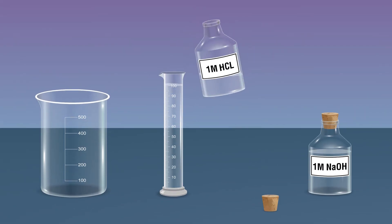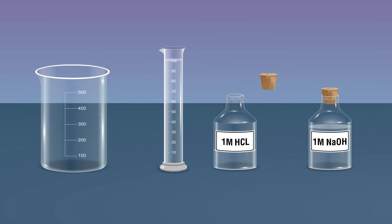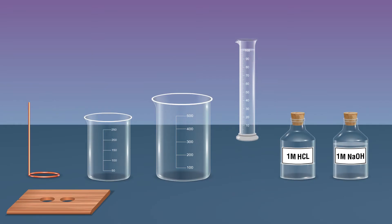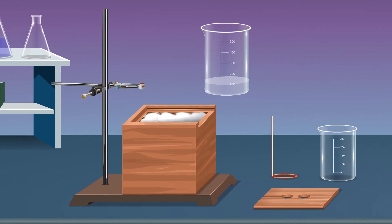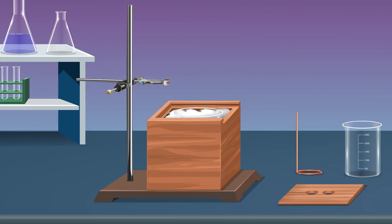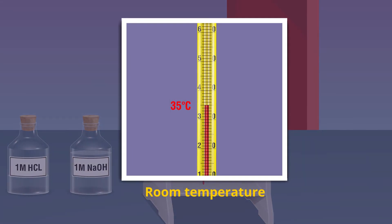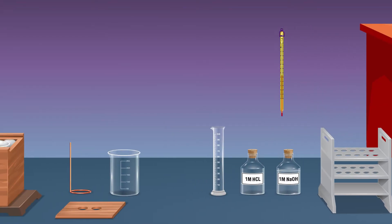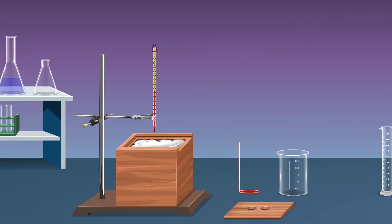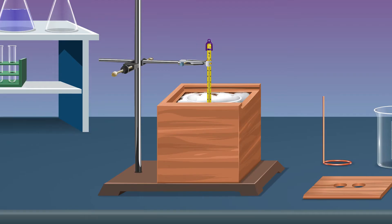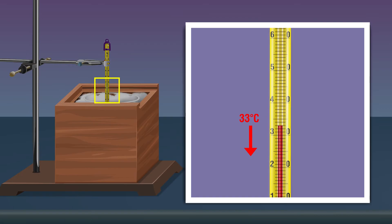Transfer 100 milliliters of 1 molar hydrochloric acid into the beaker using the measuring cylinder. Place the hydrochloric acid solution into the calorimeter. Measure the initial temperature of the hydrochloric acid and record the data T1 degrees Celsius.